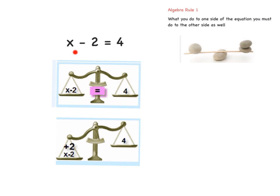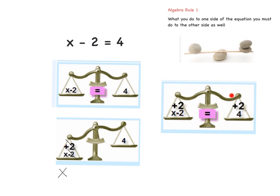To solve x, remember from the last class we need to have x on its own. So we need to get rid of everything on this side — we have minus 2, we don't need it, so we need to add 2. Look at the balance: if we add 2 just here, we get x because x minus 2 plus 2 cancels out, so we have just x. But then the right side isn't balanced, so we need to add 2 to 4 on the right side as well.